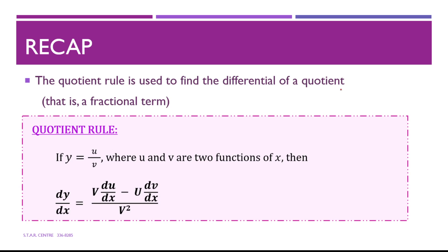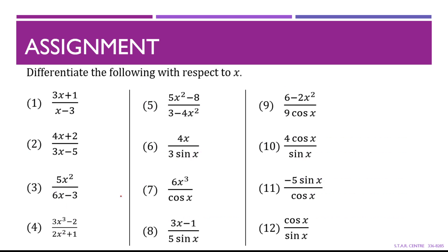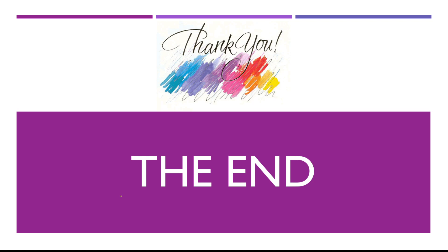To recap: the quotient rule is used to differentiate a quotient or a fractional term. We let u equal the numerator and v equal the denominator, differentiate u and v, and substitute into the quotient rule formula, then simplify as much as we can. The assignment consists of 12 questions, so feel free to try them. Let me know if there are any difficulties, and thank you for watching.